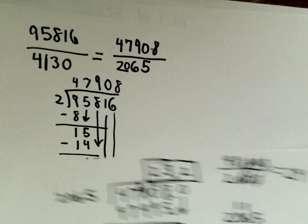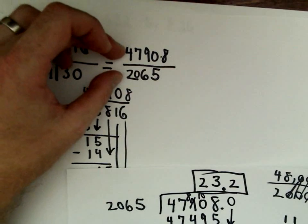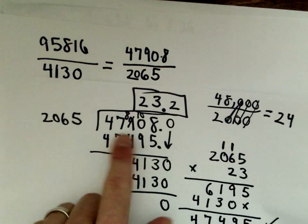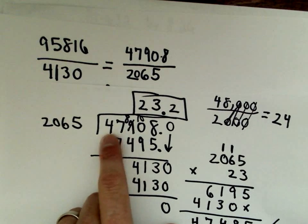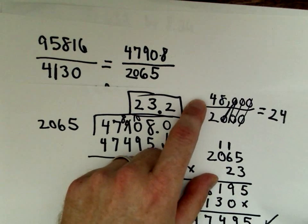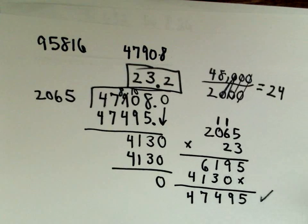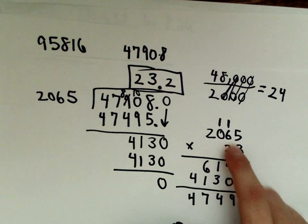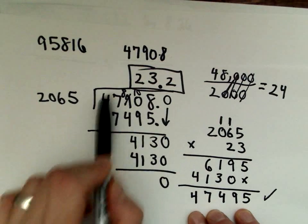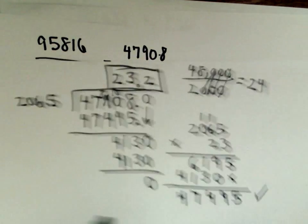A couple things here to point out, the long way. Whenever you have fractions, don't immediately jump into long division. Try to simplify them first. I guarantee you it will make things a little bit faster. The other thing too, when you're trying to do 47,908 divided by 2,065, estimate. This is one of the best things you can do with arithmetic is just round stuff off because at least you'll have a good educated guess about where to start. Notice if we had multiplied 2,065 by 24, we would have gotten a number larger than 47,908, which means we need to go smaller. That would suggest using 23.